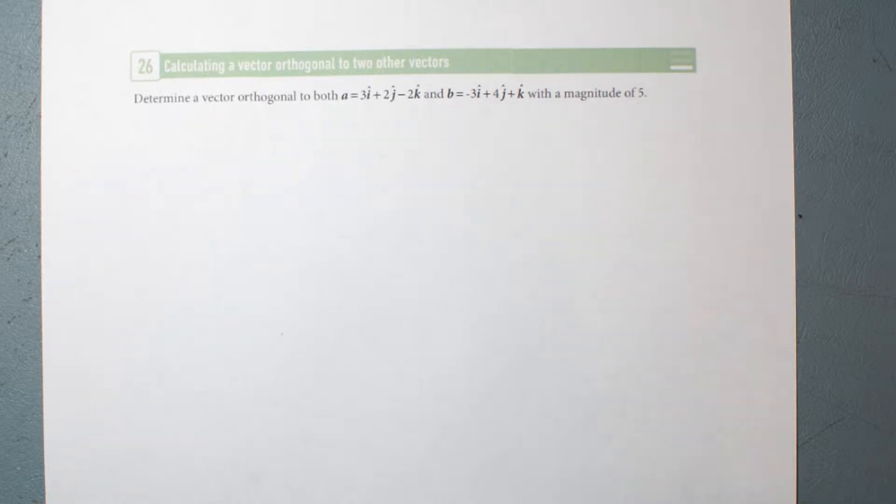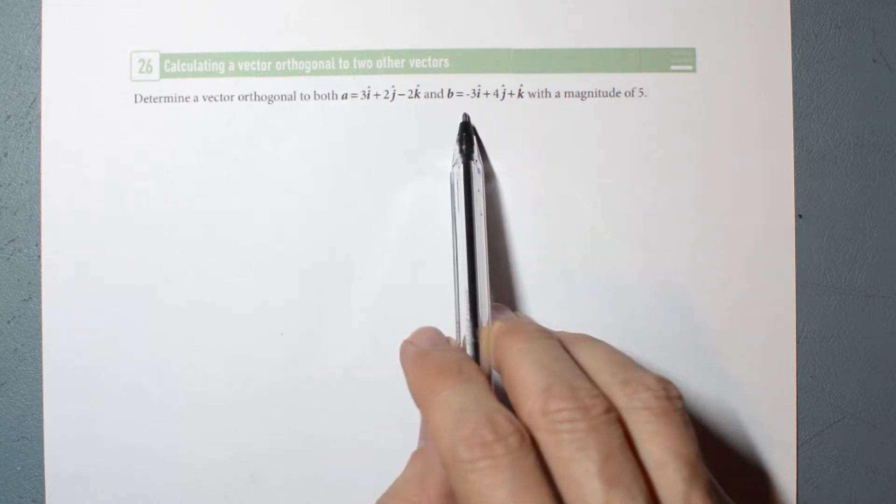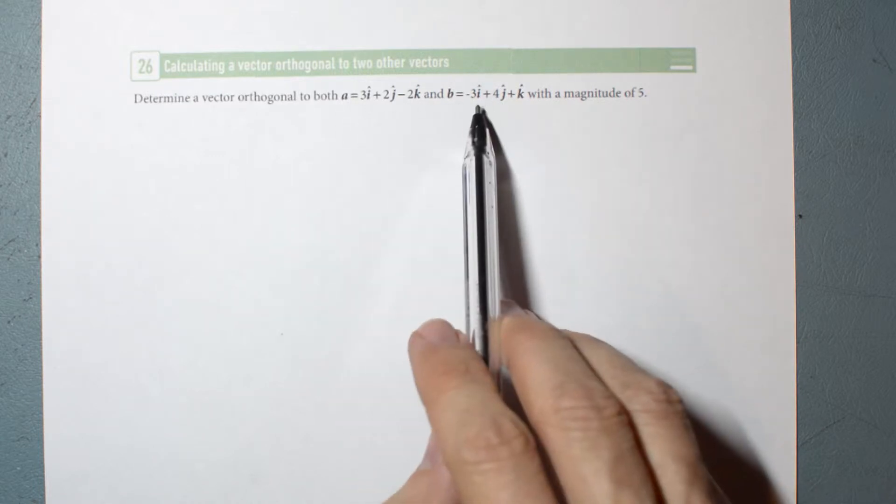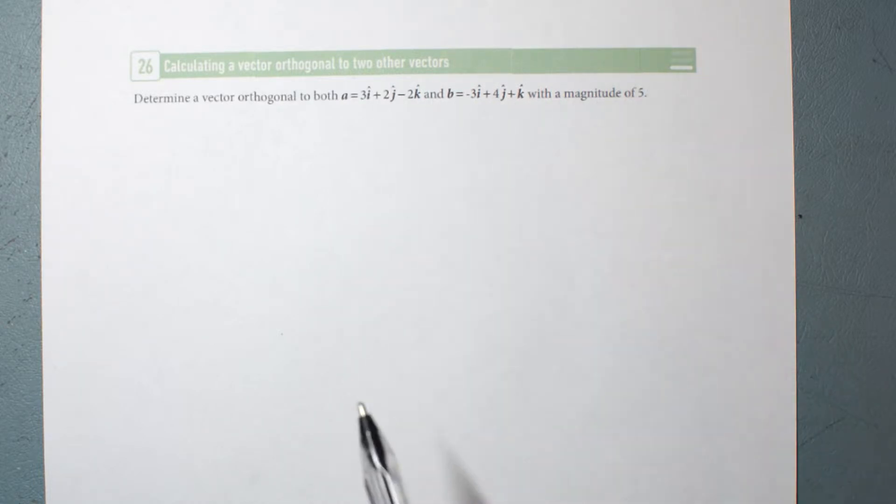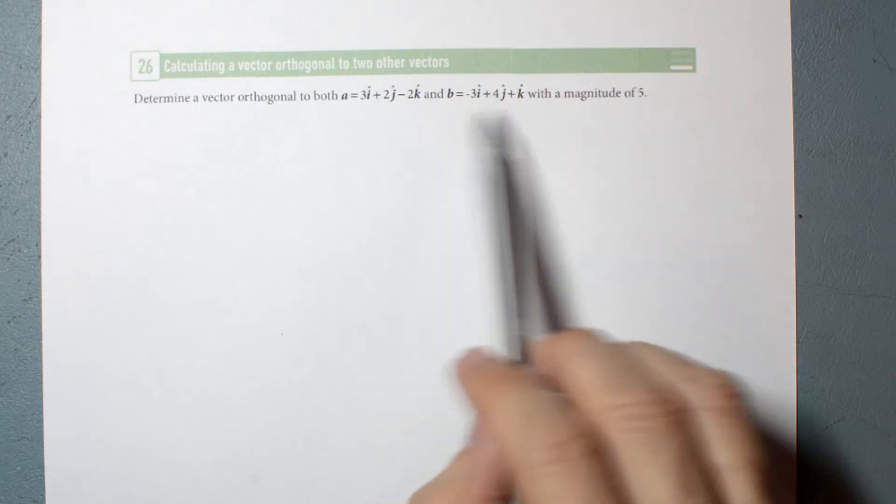Well, I can get a vector orthogonal to a and b by getting the cross product. The cross product will be perpendicular to both of those two vectors. And from that, I'm going to find a vector with a magnitude of 5, one step at a time. Let's get a vector orthogonal to both of these by getting the cross product.